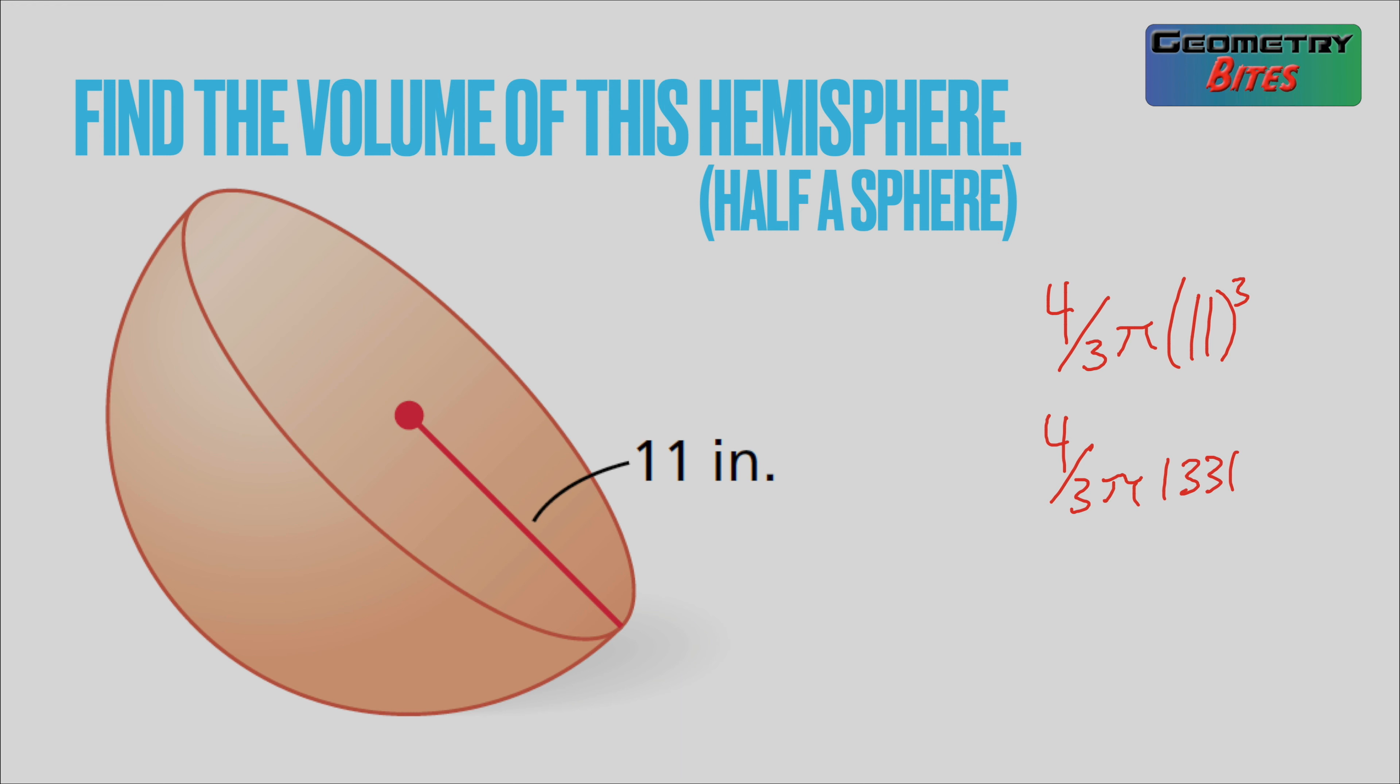So what we really have here is 4/3 of π times 1331. We can multiply it by 4 and that's going to get me 5324, and then I'm going to say over 3π. Oh wait, that's not the whole thing, that's double what I need. So let's go back and change that a little bit. We're going to get 2662π over 3 inches cubed.